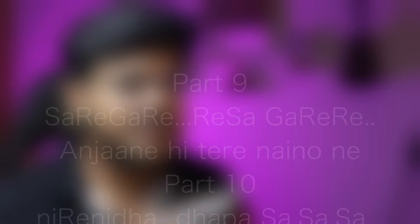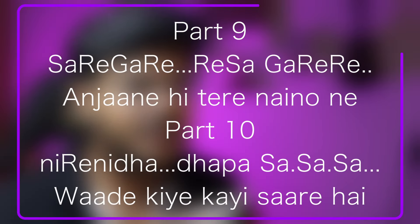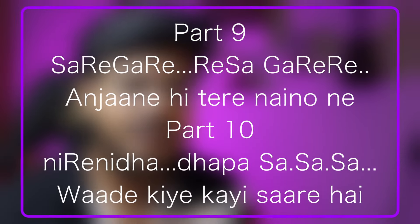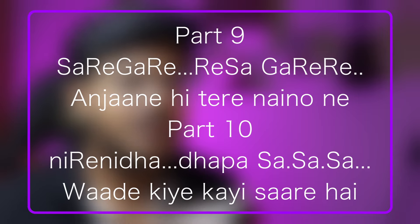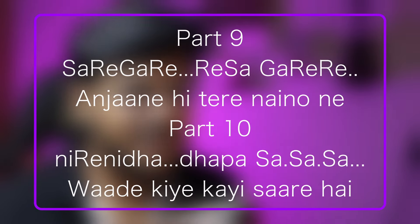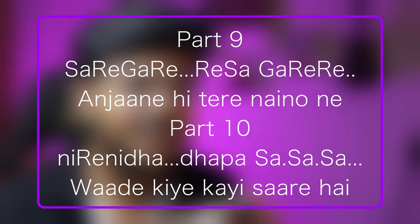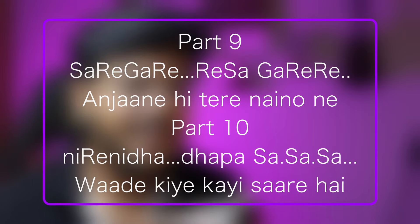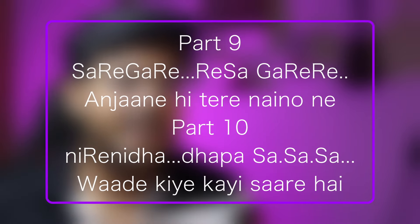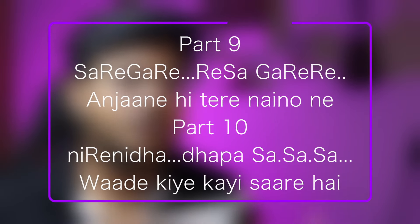After this, the next lyrics are: 'Anjane hai tere naino ne, waade ke kai saare hai.' For these lines, you need to repeat part 9 and part 10 again. So when you play all of this together, it will sound like this.